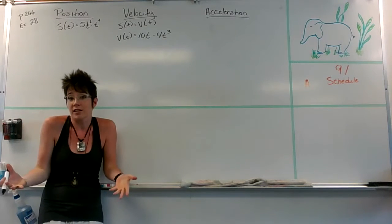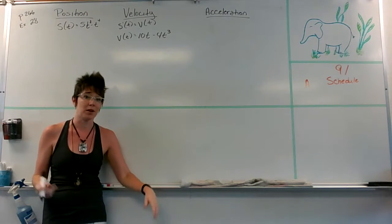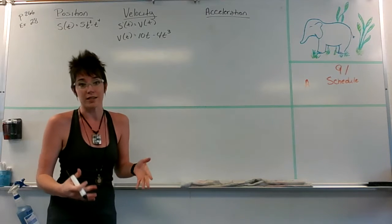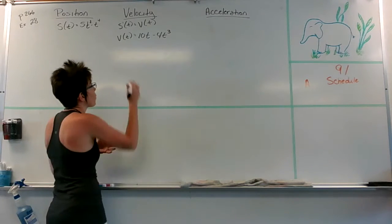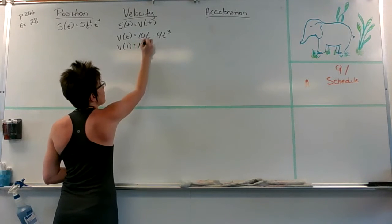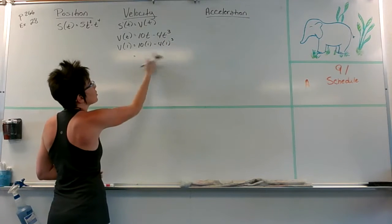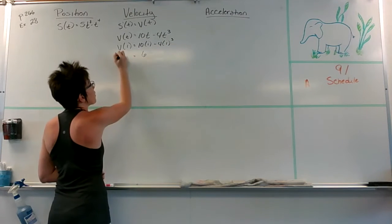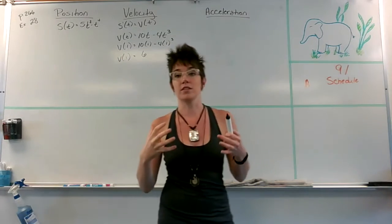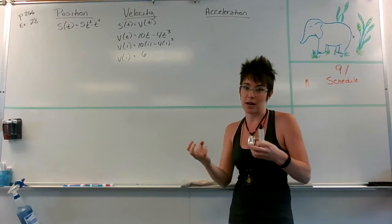If I want to know my velocity after one second, I use the velocity function and plug in one for time. So v of one gives me 10 minus 4 times one cubed, which is essentially just the number six. My velocity after one second is equal to six. These are calculus ideas getting pulled into what we already understand about position and time.